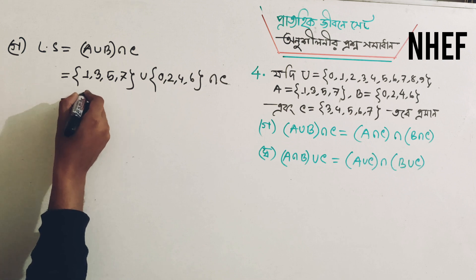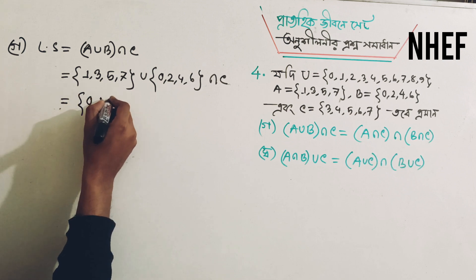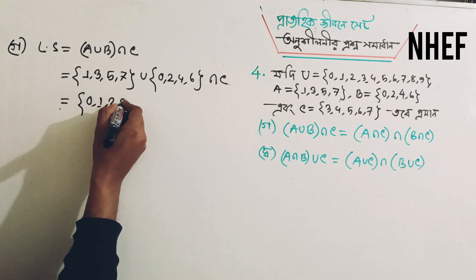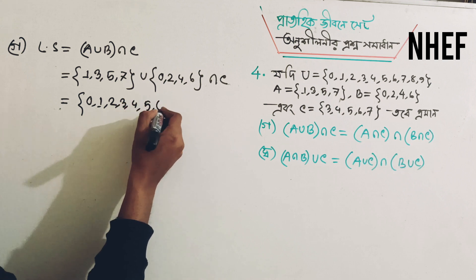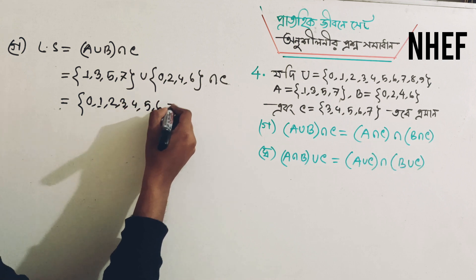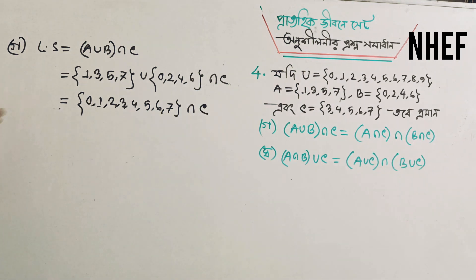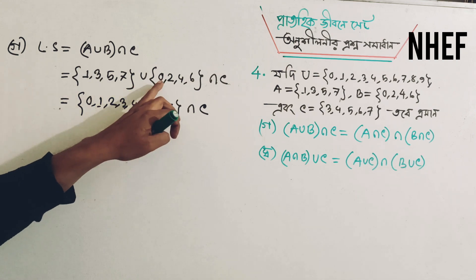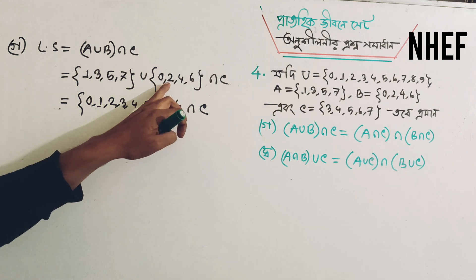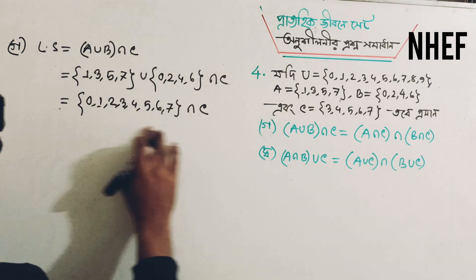Let us write this number: 0, 1, 2, 3, 4, 5, 6, 7, 8. Right? Let us see. This number: 1, 3, 4, 5, 7, 8, 9. We can now do this number.